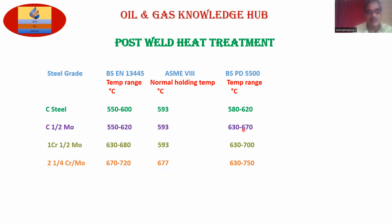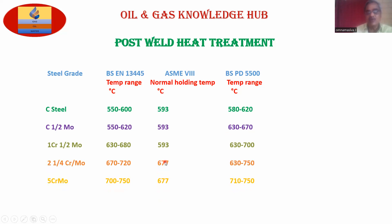2.25 chrome one-moly: 680 to 670 degrees Celsius range. Holding temperature 677 degrees Celsius. BS range 630 to 750 degrees Celsius.